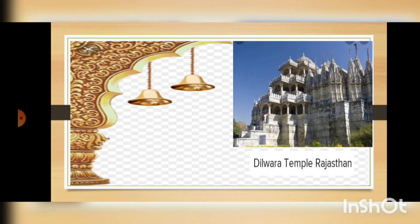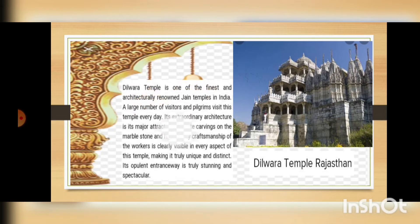You can see the Dilwara temple in Rajasthan — this is a Jain temple. Dilwara temple is one of the finest and architecturally renowned Jain temples in India. A large number of visitors and pilgrims visit this temple every day. Its extraordinary architecture is its major attraction. Intricate carvings on the marble stone and high quality craftsmanship of the workers is clearly visible in every aspect of this temple, making it truly unique and distinct. Its opulent entranceway is truly stunning and spectacular.